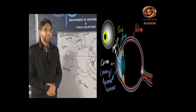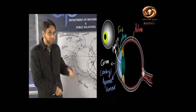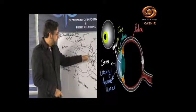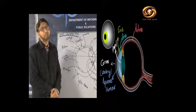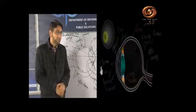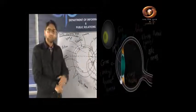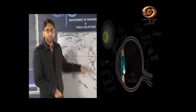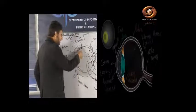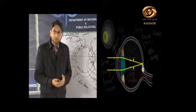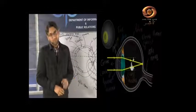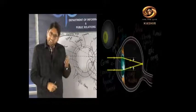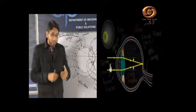Remember, children: the camera is actually an imitation of nature — we imitated the eye, not the other way around. Now, behind the lens — which is a convex lens — is the retina. The retina is equivalent to the photographic film in a camera. It is a photo-sensitive material, but natural. It is made up of cells and nerves.